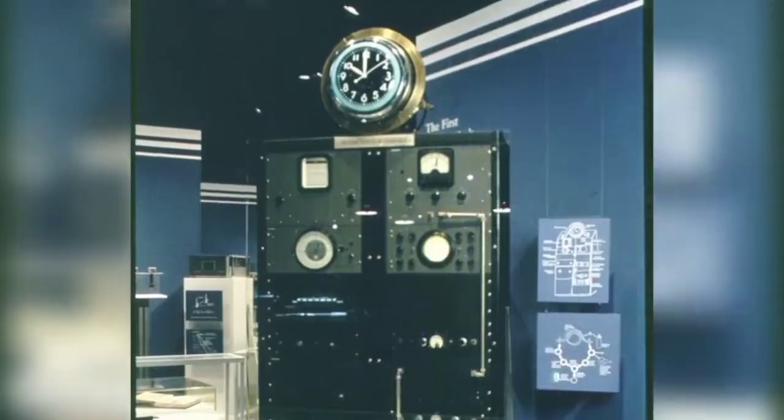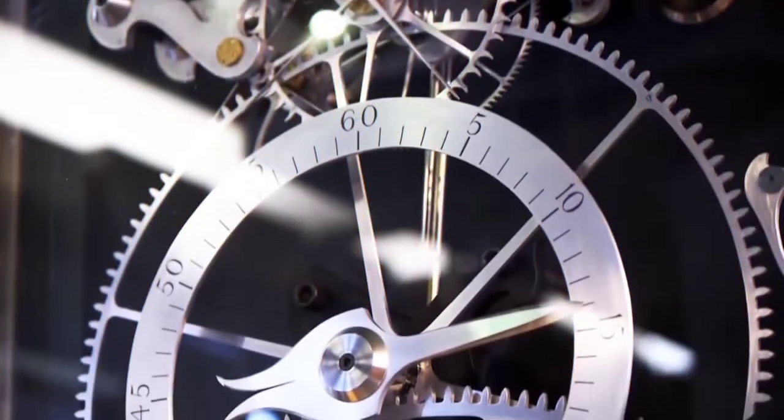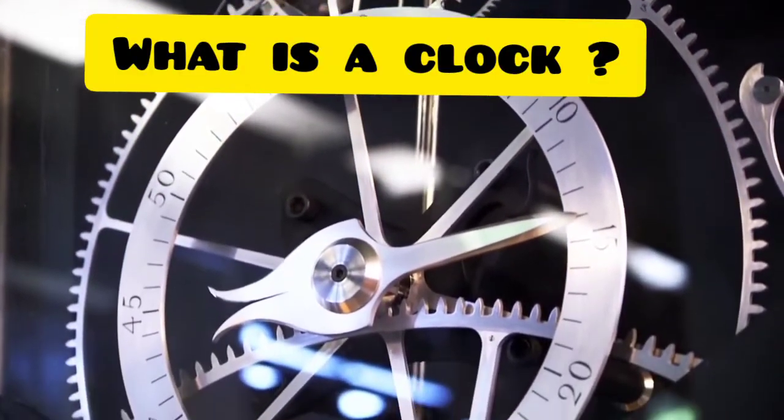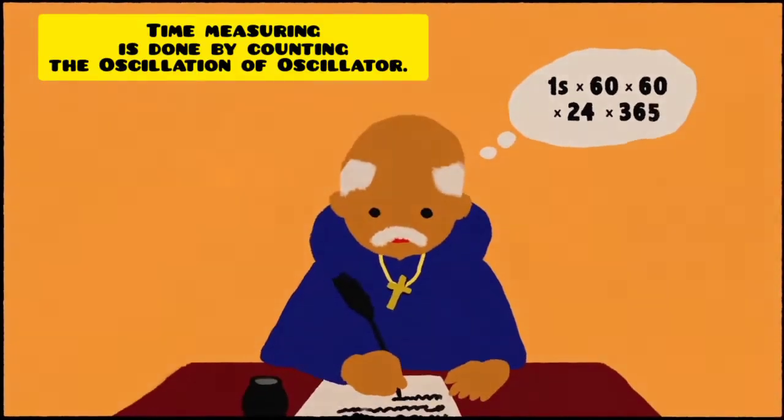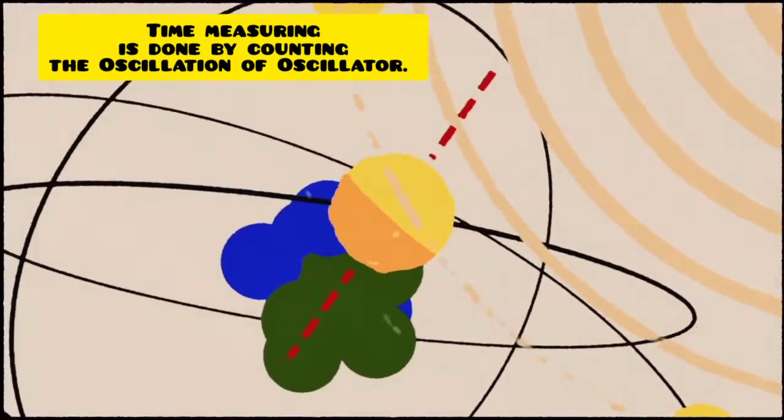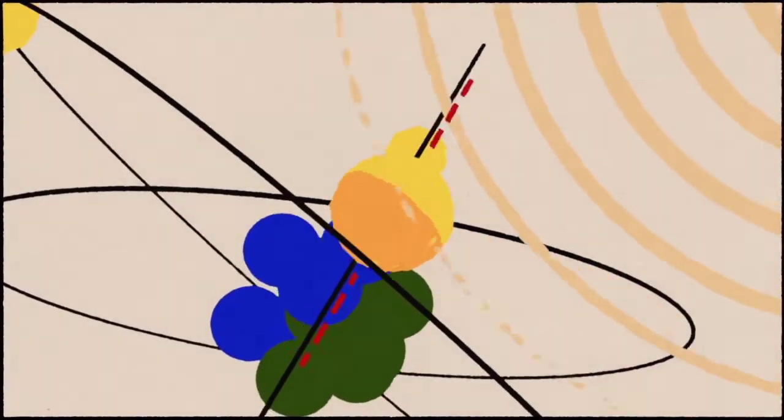Before we dive deeper in the concept of atomic clock, we must have a little bit of information regarding clock. So what is a clock? A clock is a device which is used to measure time and time measuring is done by counting the oscillations of the oscillator. This is the basic fundamental process of all sorts of clocks.